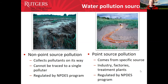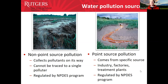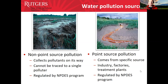We also have point source pollution, which you may be more familiar with. This is where pollutants come from a very specific source — a spill or a direct discharge into a river or stream. Point source pollution has a so-called smoking gun and is usually associated with industry, factories, or treatment plants.